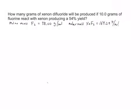How many grams of xenon difluoride will be produced if 10.0 grams of fluorine react with xenon, producing a 54% yield?